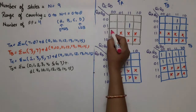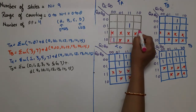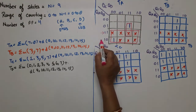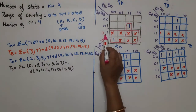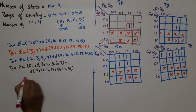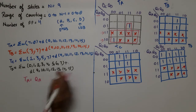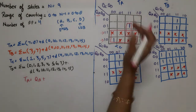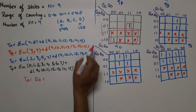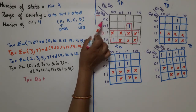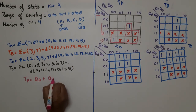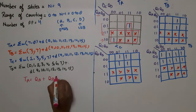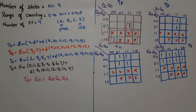For TA simplification: one octet group can be formed using 2 rows, with the common value being 1 for QA, giving the first term as QA. Then a pair is formed in one row where both QC and QD are 1. So the TA equation becomes TA = QA + QB·QC·QD.